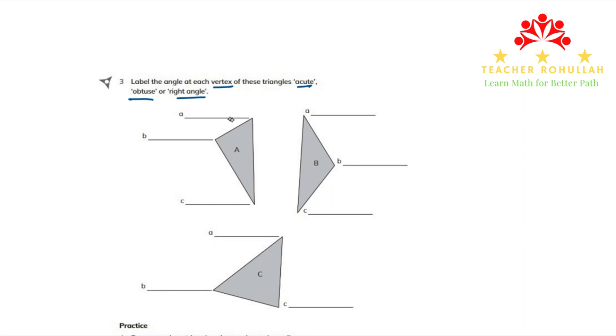So starting from A, this angle is acute angle because its size is less than 90 degrees. And angle B is right angle. Angle C is also acute because it's less than 90 degrees.